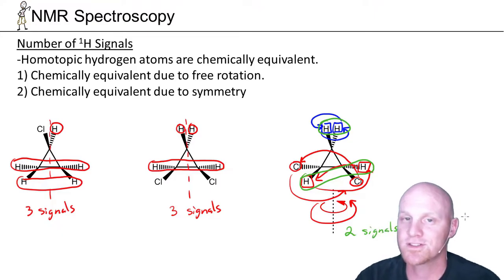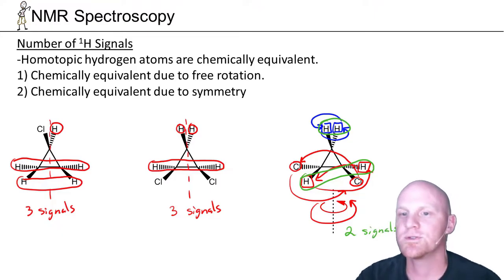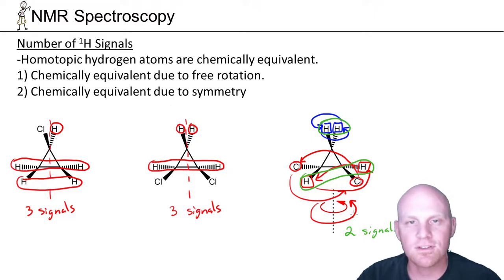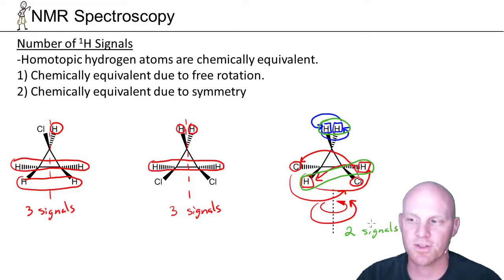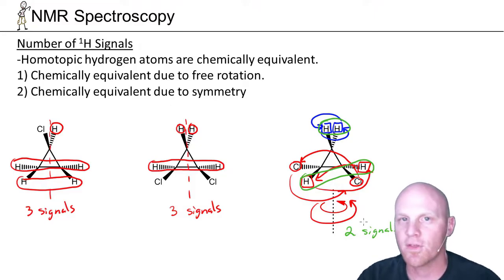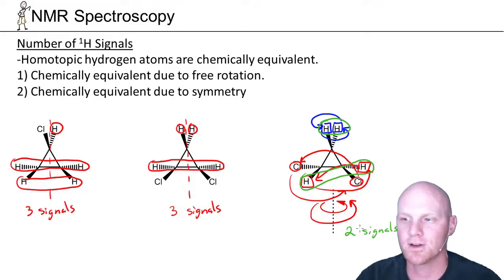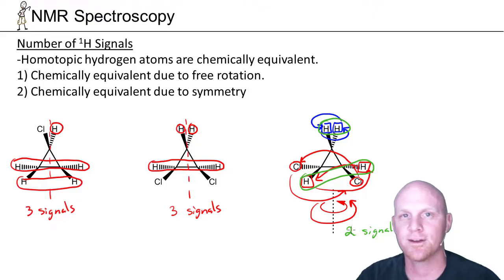Rotational symmetry is often the most difficult for students to evaluate. Planes of symmetry students usually start to see the pattern, but rotational symmetry is more challenging. It is something you're likely to encounter, which is why I wanted to cover this more challenging example.